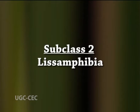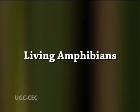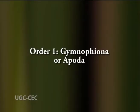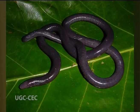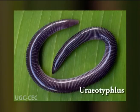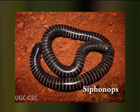Subclass 2, Lysamphibia, includes modern amphibia having small simple teeth and no dermal bony skeleton. Living amphibia includes three orders. Order 1, Gymnophiona or Apoda — in Greek, gymnos means naked and ophionios means serpent-like. These are primitive blind burrowing tropical forms. Body is elongated eel type. Limbs, girdles and tail are absent. About 55 species are known, including Ichthyophis, Uraeotyphlus, and Siphonops.